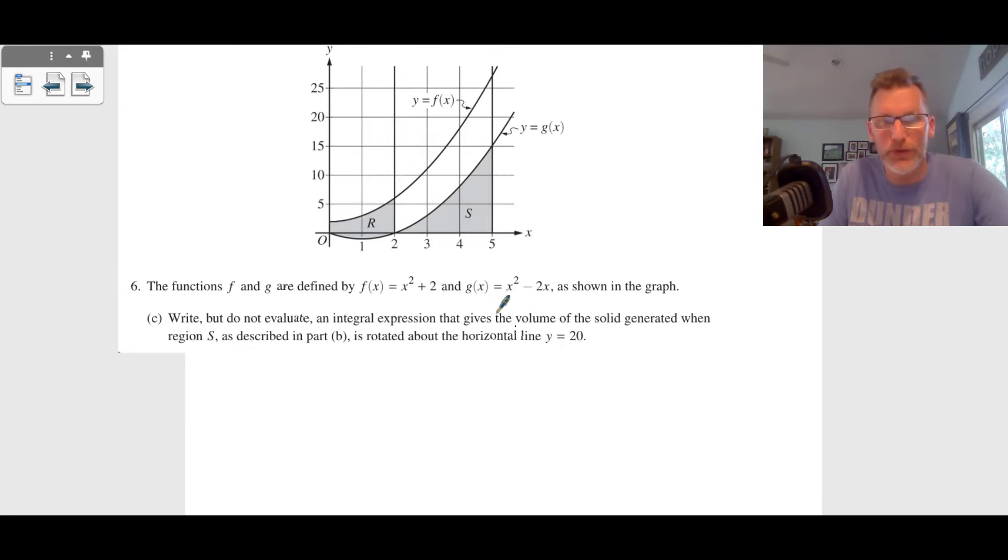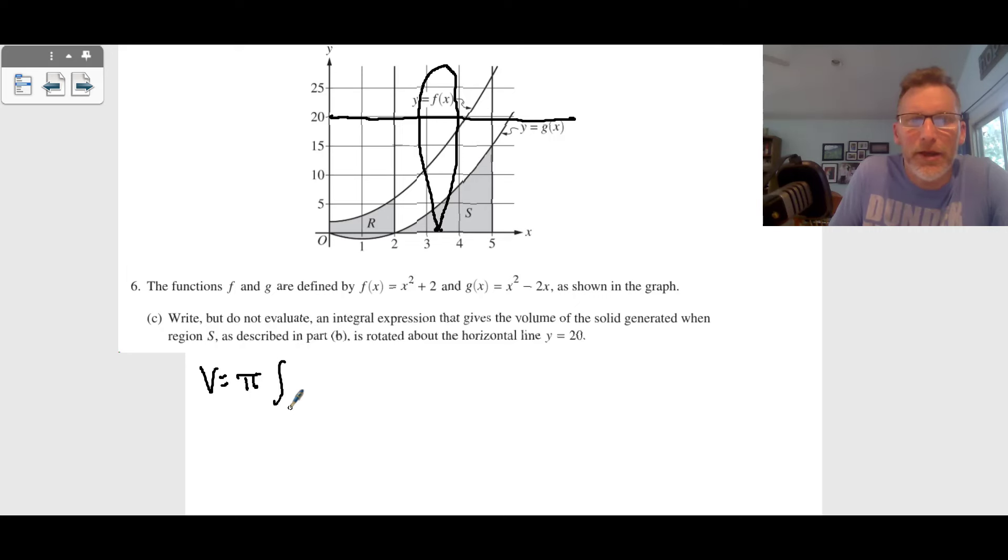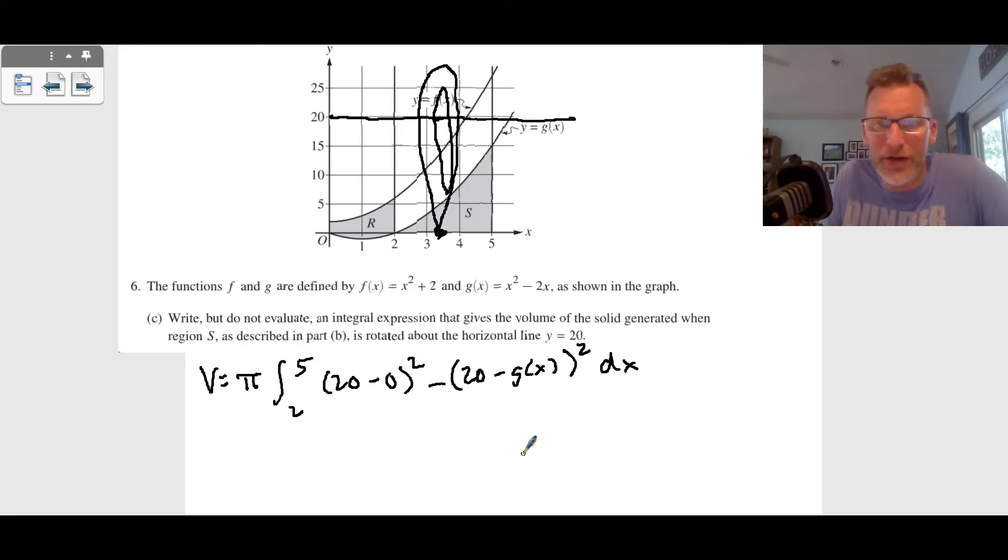Part C, this is the last part. They said we want to rotate a volume around this line up here, just for region S. So we're rotating this guy. Volume equals pi from two to five, and we're going from 20 minus zero squared, and then we're going to cut out the inside here. We're rotating this guy minus 20, and that's the top one minus g(x) squared dx. That is a pi r squared kind of rotation. They wanted to just have us set it up, so I set it up and I am done.